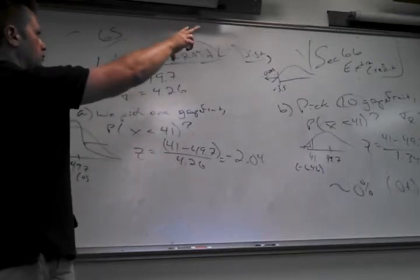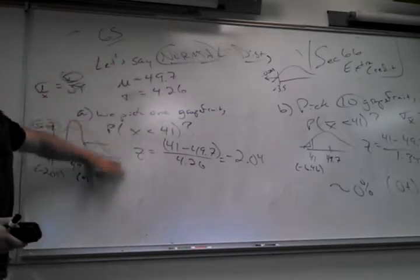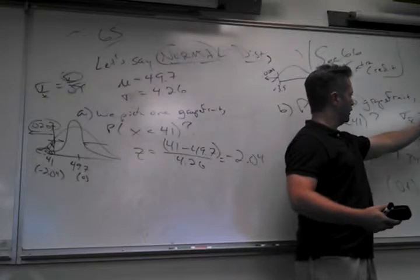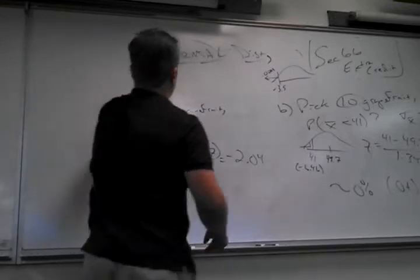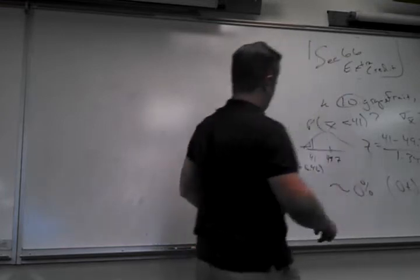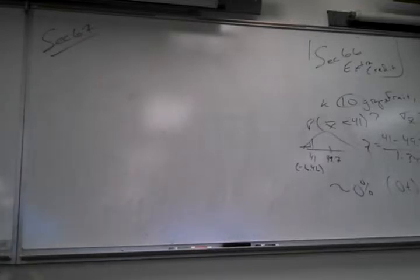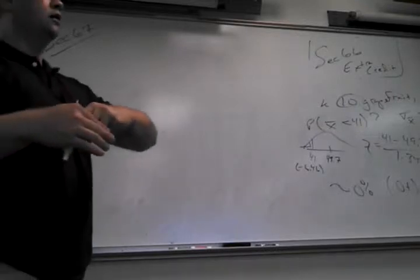Section 6.6 is extra credit. I'm going to get into 6.7. The better you are with 6.2 and 6.3, the easier this is going to be — it's just knowing when to apply the adjustment. Very little changes. Journal articles, Gallup polls — they all use processes very similar to this to show evidence of something.